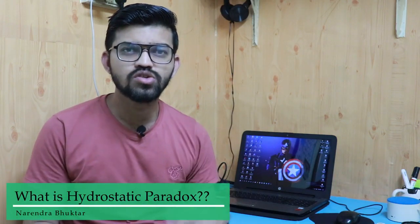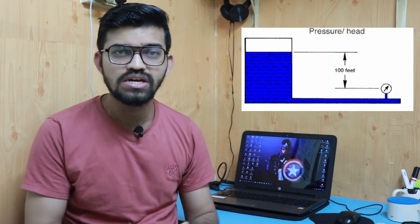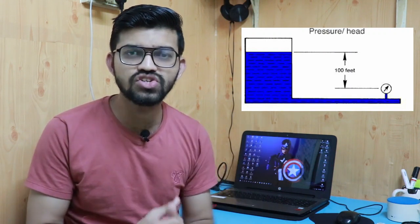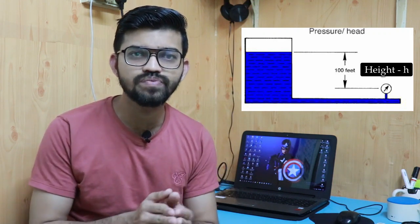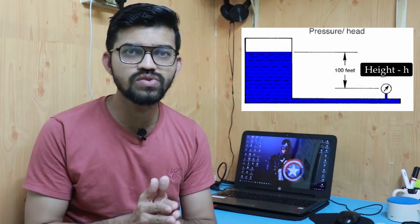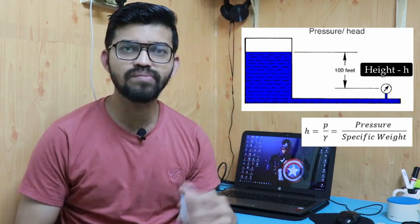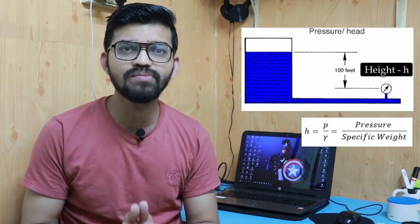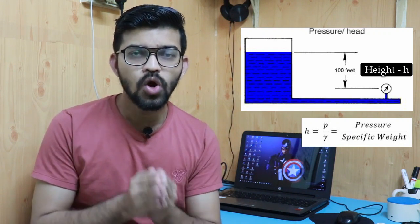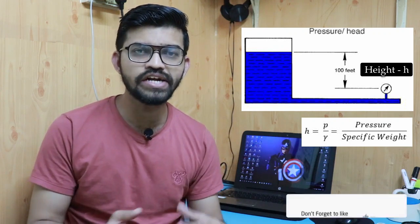What is nothing but the hydrostatic paradox? This term is related to fluid mechanics and pressure head. Pressure head is the amount of height — suppose a particular fluid enclosed in a container having height h, so that h will be the pressure head for that fluid. We can calculate it using the formula: pressure head h equals the total pressure exerted by the liquid on the adjacent walls divided by the specific weight of that liquid. So the formula becomes h = p divided by specific weight.